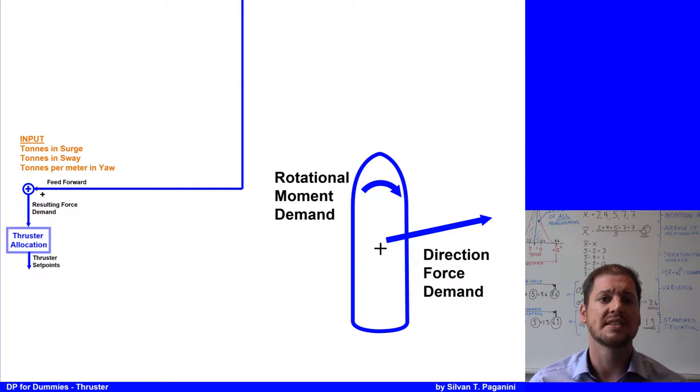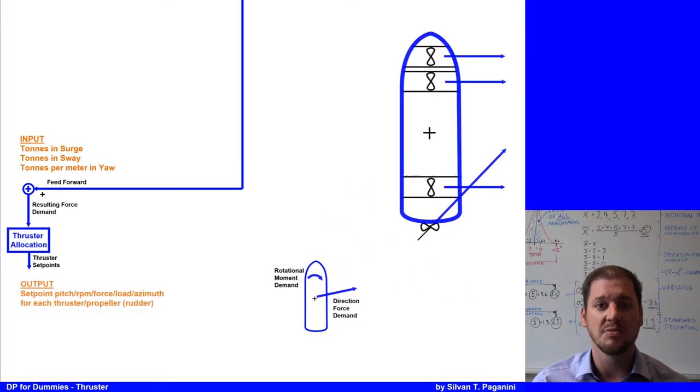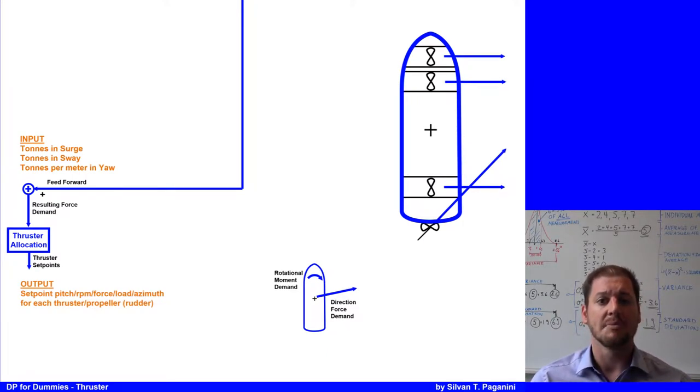The thruster modes we will discuss later. Using this information, the forces are turned into thruster commands like RPM, pitch, azimuth angle, load, etc. for each thruster. The demand is distributed in such a way as to obtain the directional force and rotational movement required for position and heading control, while also ensuring optimum thruster use within minimum power consumption and minimum wear and tear on the propulsion equipment.